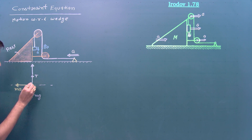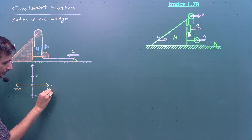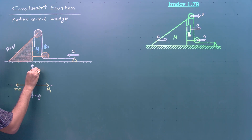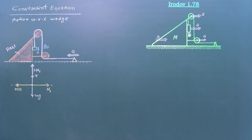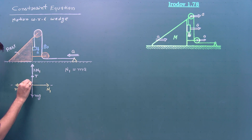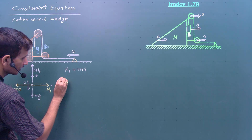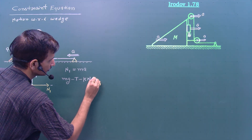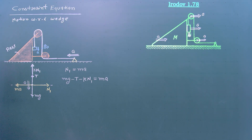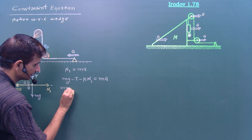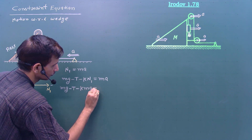The contact surface gives a normal reaction N1 in the horizontal direction. The friction force equals k times N1. Since there is no motion of this block in the x direction, N1 must equal ma. The acceleration in the y direction is a, so applying Newton's law: mg minus T minus k·N1 equals m·a. Substituting N1 = ma gives: mg minus T minus k·m·a equals m·a. This is the first equation.